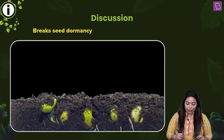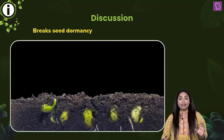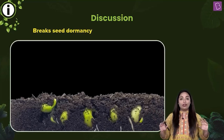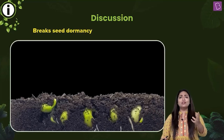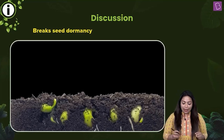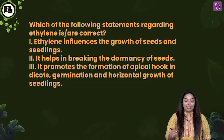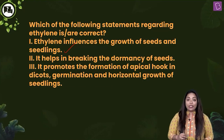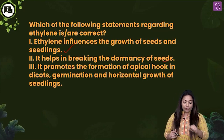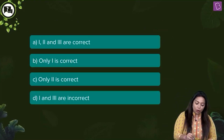If a seed is dormant — in simple terms, the seed is on vacation; no matter how much water, food, or good soil you give it, it refuses to germinate — when that seed is treated with Ethylene, it can help break dormancy. So what's the answer? Ethylene influences the growth of seeds and seedlings: yes. It helps in breaking dormancy: yes. It promotes apical hook formation, germination and horizontal growth: yes. All three statements — one, two and three — are correct.